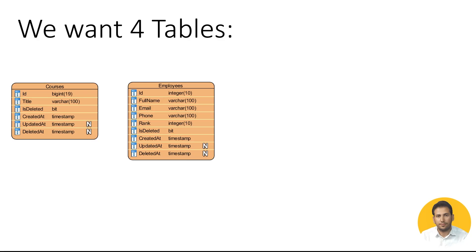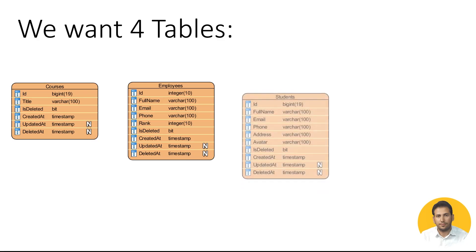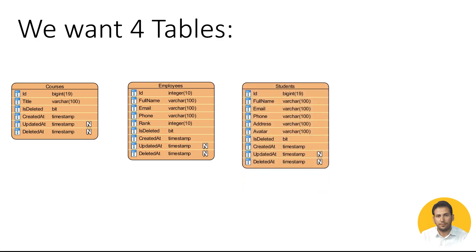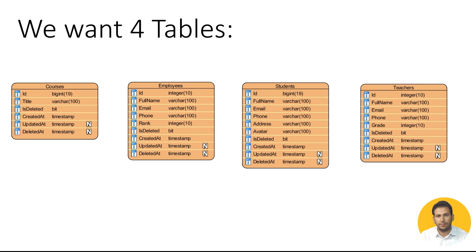You can see that for now we have the id and the four: is_deleted, created_at, updated_at, deleted_at - and they are repeating. In the next table we have students: again we have id, then full_name, email, phone, address, avatar, again is_deleted, created_at, updated_at, and deleted_at.